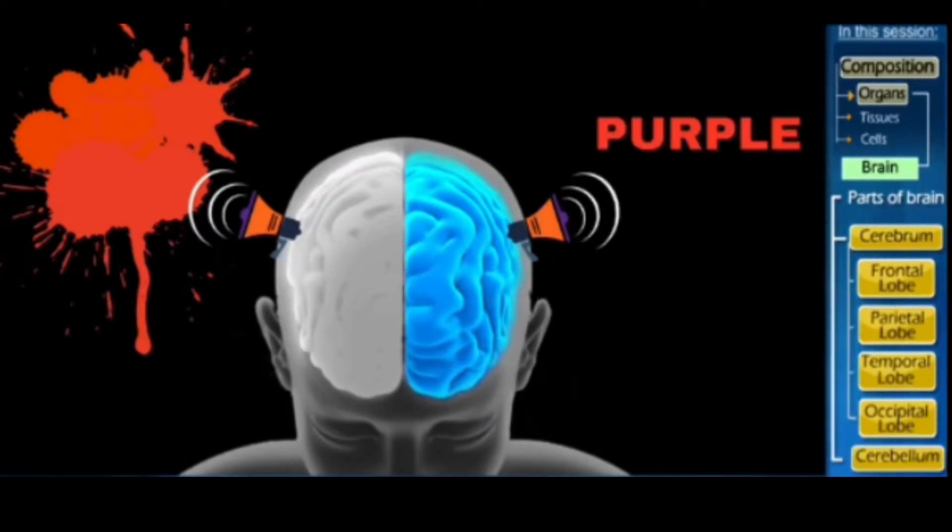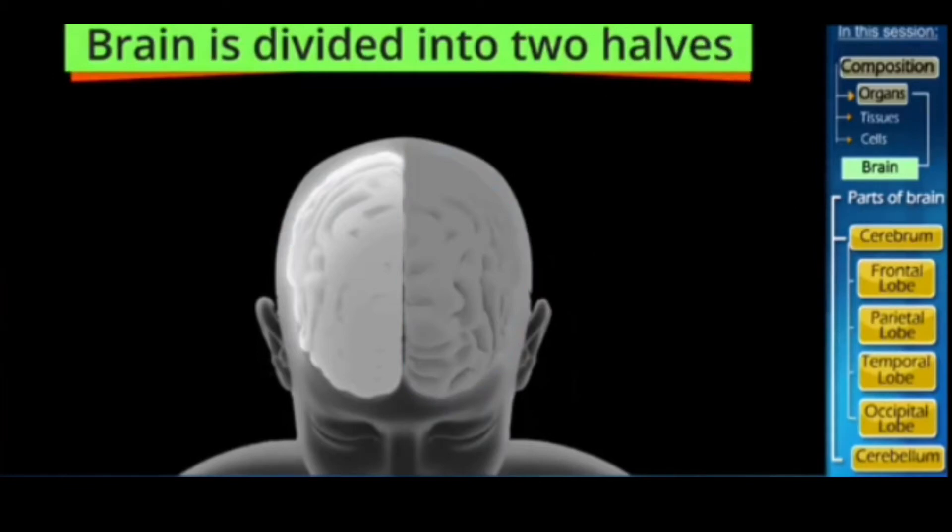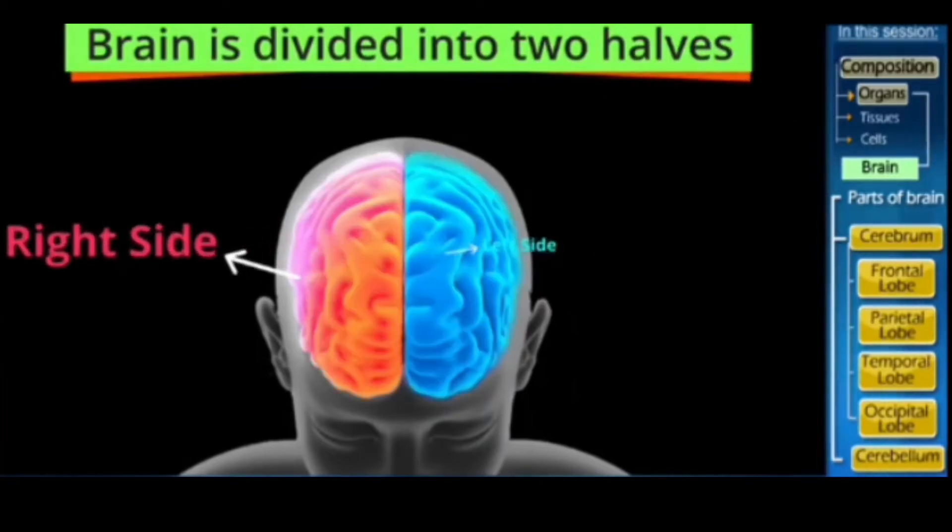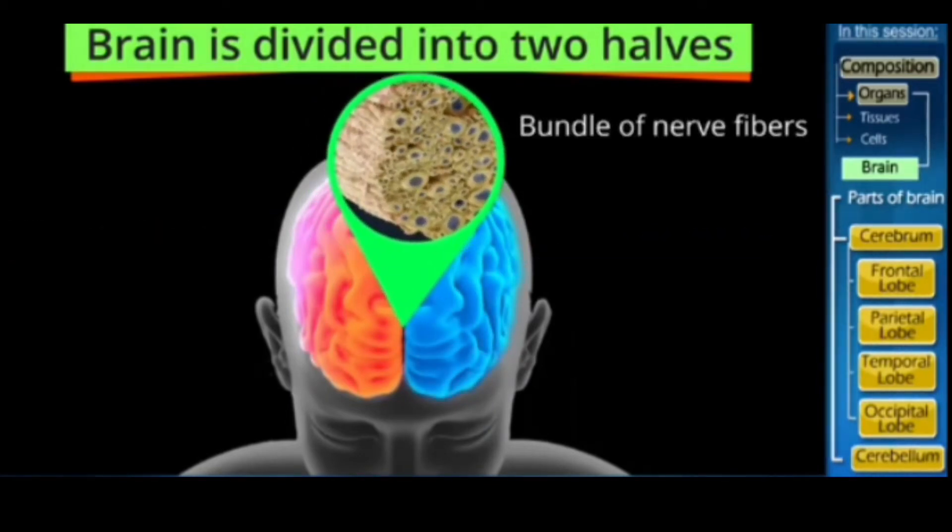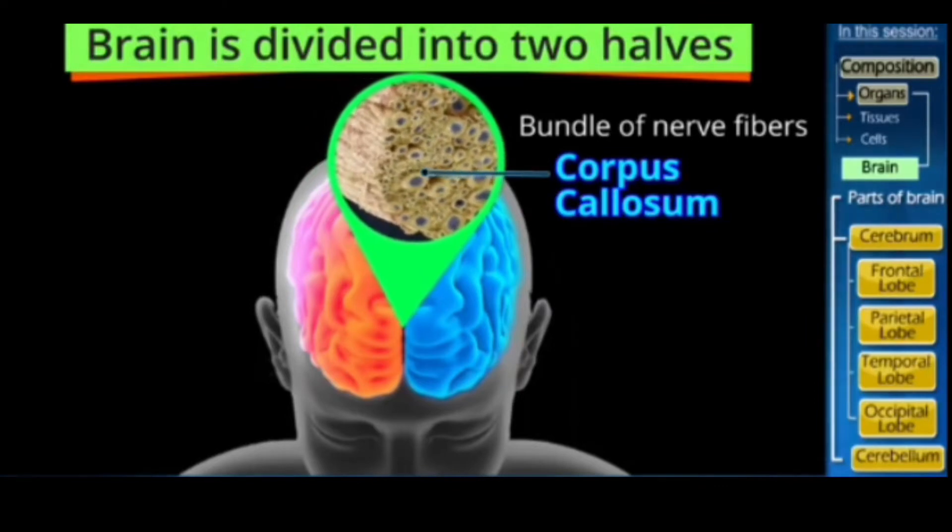By this we know that the brain is divided into two halves, the right half and the left half, and both these halves are connected to each other by a bundle of nerve fibers called the corpus callosum.